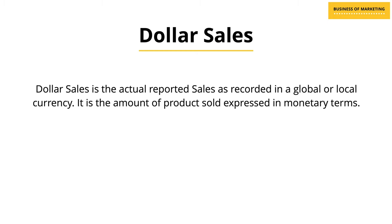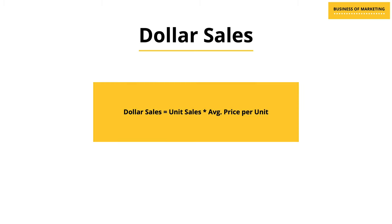The first measure is value sales, also sometimes referred to as dollar sales or the respective currency in whichever country it is being used. Dollar sales is the actual reported sales recorded in a global or local currency — it is the total product sold expressed in monetary terms. To calculate dollar sales, you multiply unit sales by the average price per unit. When someone is referring to sales, they are most likely referring to value sales.